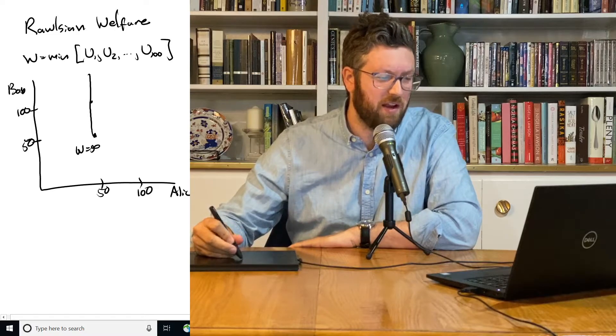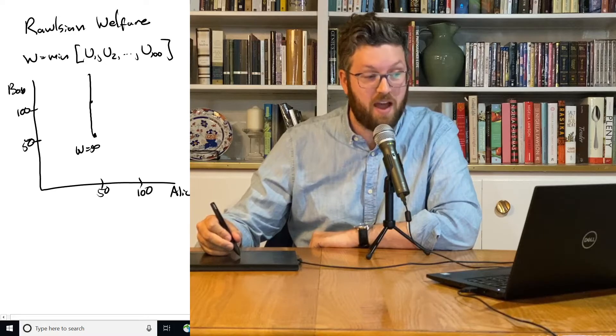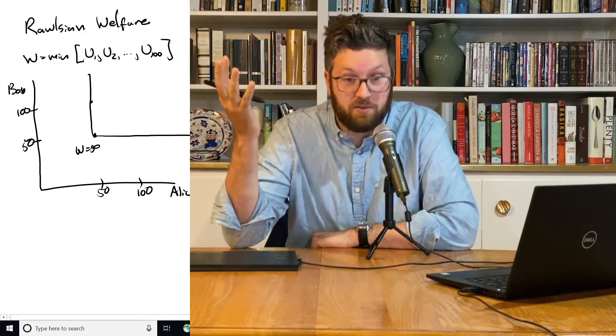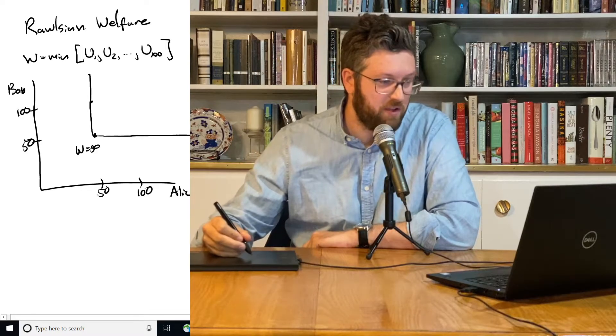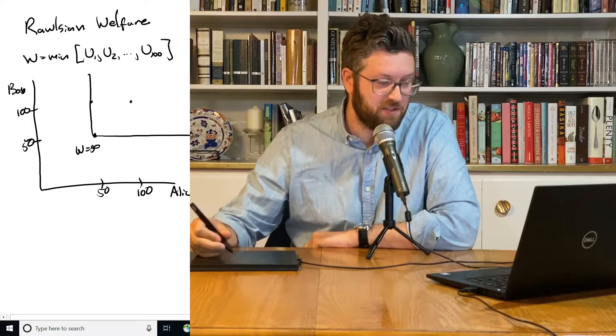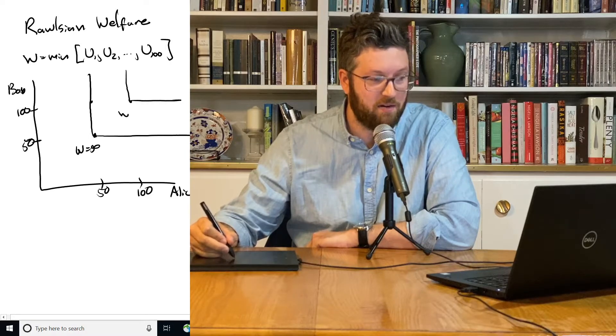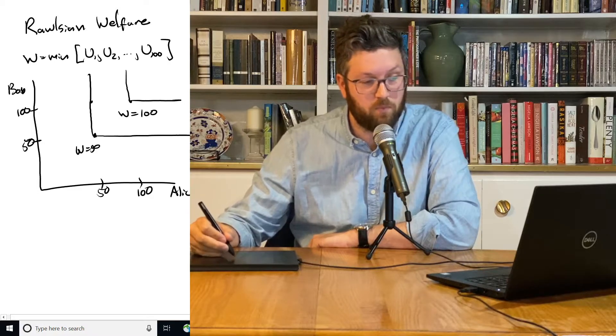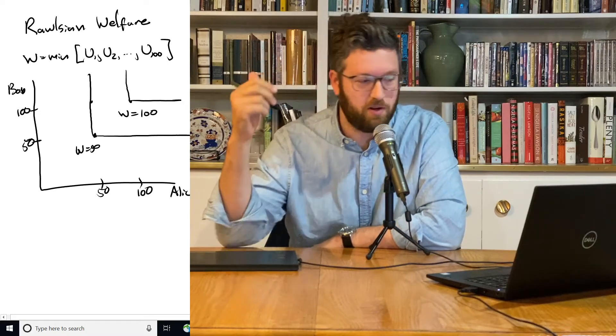So we end up drawing a vertical line. Similarly, if Bob is stuck at 50 and we give Alice more utility, we still are on the same welfare indifference curve. We don't go up. Only if they both get better off, say, for example, they're both at 100 utility, are we now on to a higher welfare indifference curve, where welfare is now equal to 100 because the utility of the lowest person worst off is 100.